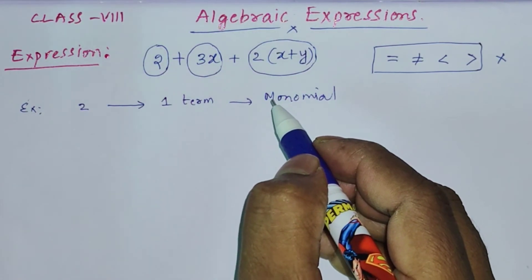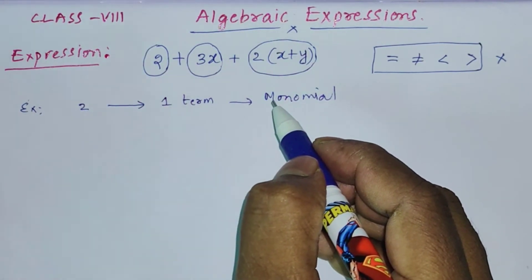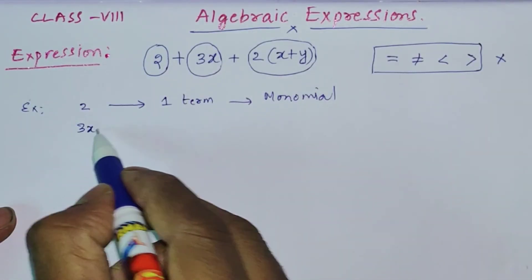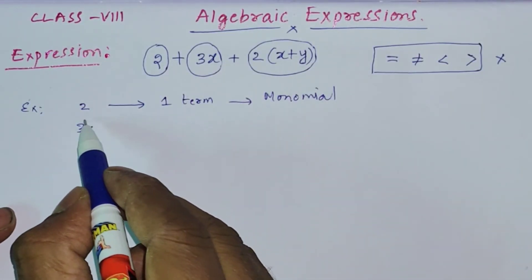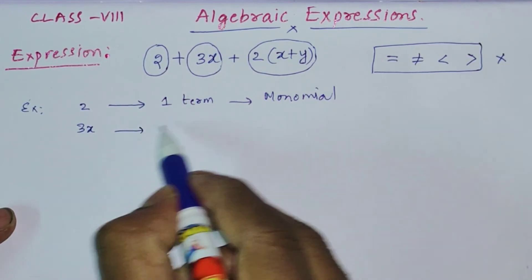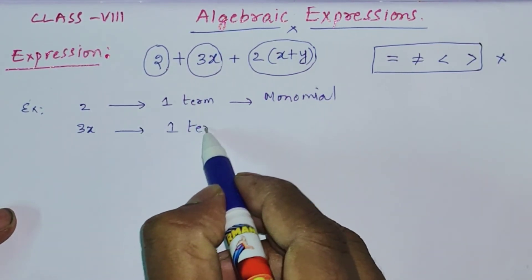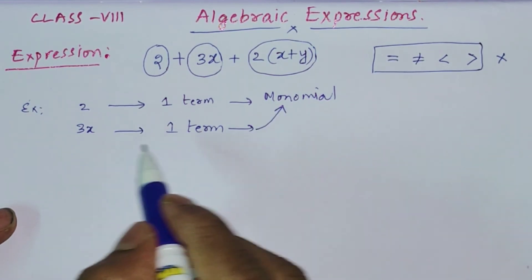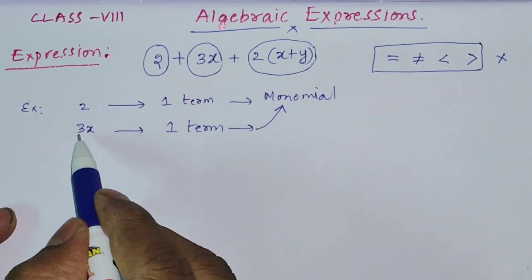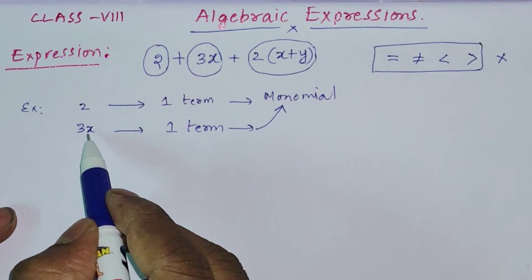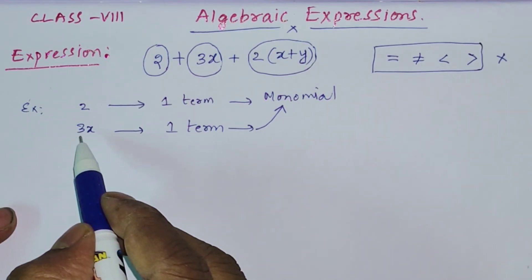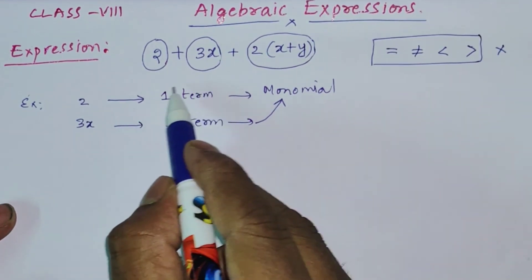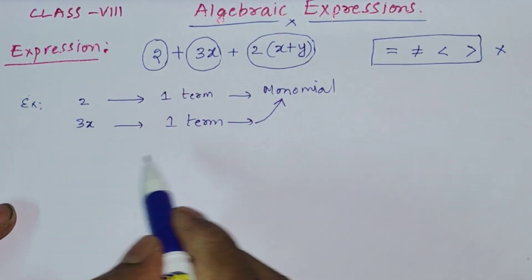For example, 3x — that is also only one term, so it is also a monomial. In this one term we have a number along with a variable. Any expression that contains only one term is called a monomial.